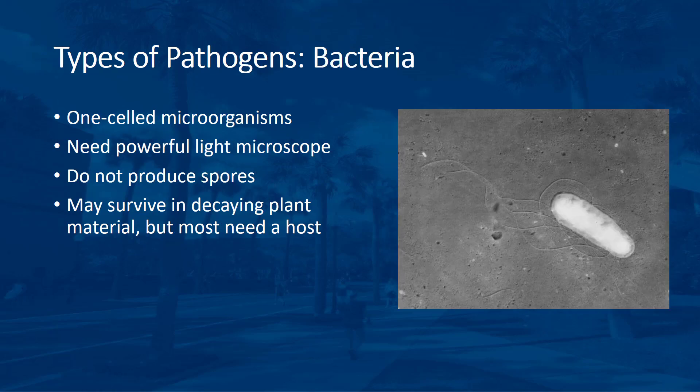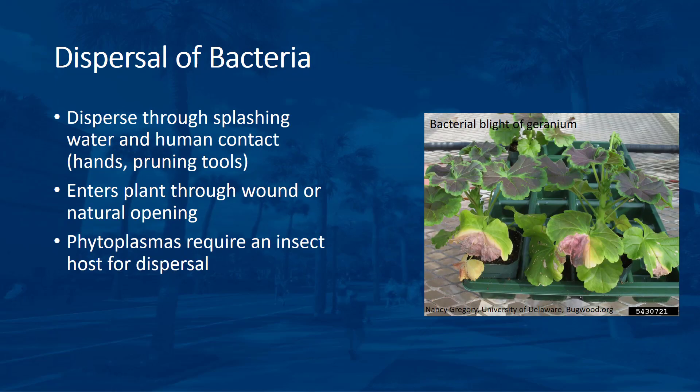Bacteria are one-celled organisms that are so small they can only be seen with a powerful light microscope. Most plant pathogenic bacteria do not produce spores. Although some bacteria can survive in the soil and decaying plant material for a time, they usually need a host to survive. Bacteria are dependent on outside agents for dispersal from plant to plant. Splashing water is the chief means by which bacteria are disseminated. Another important means of dispersal is through human contact. Many bacterial diseases can be spread simply through the process of touching an infected plant and then touching a healthy plant with hands or pruning tools. Bacteria cannot penetrate the cuticle of plants, but must enter the plant through a wound or natural opening to initiate disease.